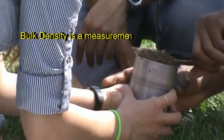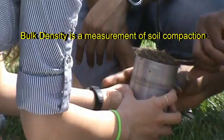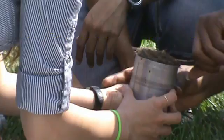Remember, bulk density is a measurement of soil compaction, so pressing the excess soil into the cylinder would cause our bulk density reading to be slightly higher than it is in the field.